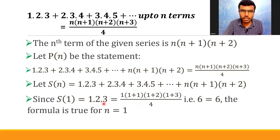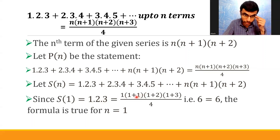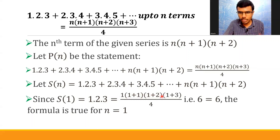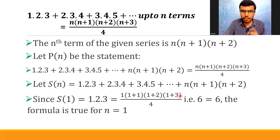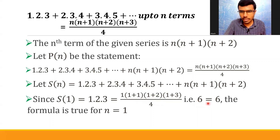What's 1×2×3? It's 6. And on the RHS: 1×(1+1) is 2, (1+2) is 3, (1+3) is 4. So basically 1×2×3×4 divided by 4 — the 4 gets cancelled, giving 2×3 = 6. So that's 6 = 6. The formula is true for n=1. One part is done.